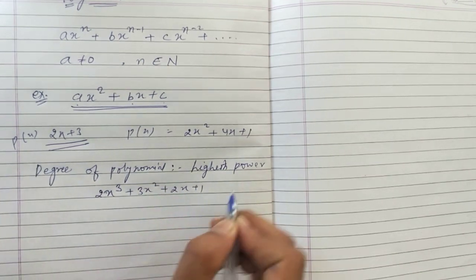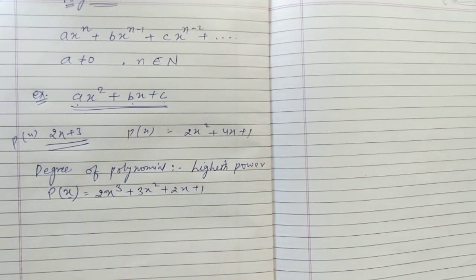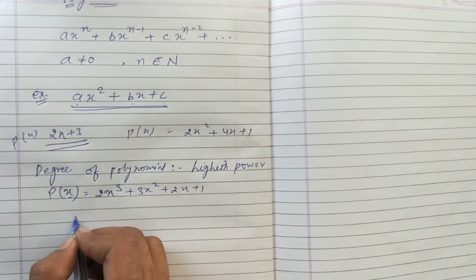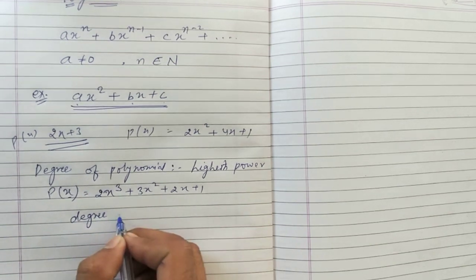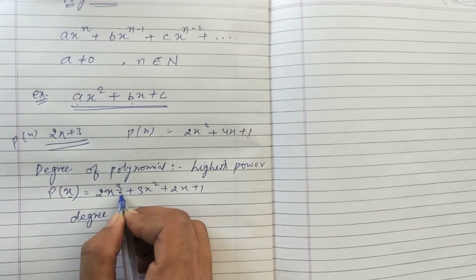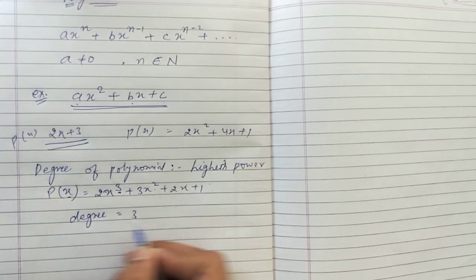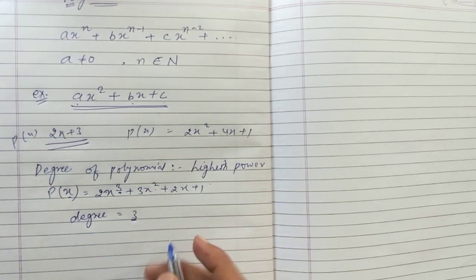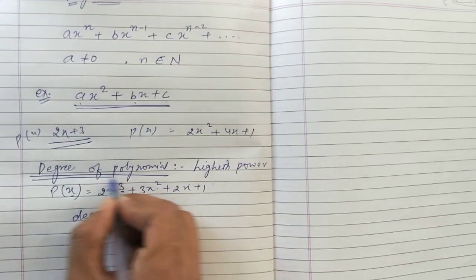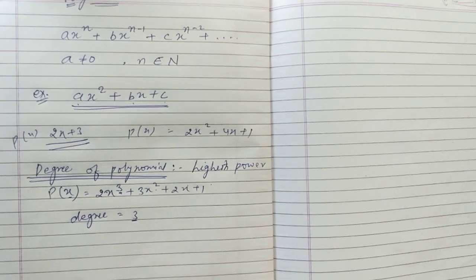For example, take 2x³ + 3x² + 2x + 1. The highest power here is 3, so the degree of this polynomial is 3. To find the degree of any polynomial, simply look for the highest power — that will be the degree.